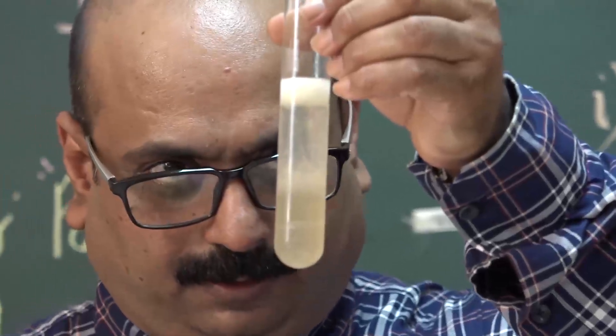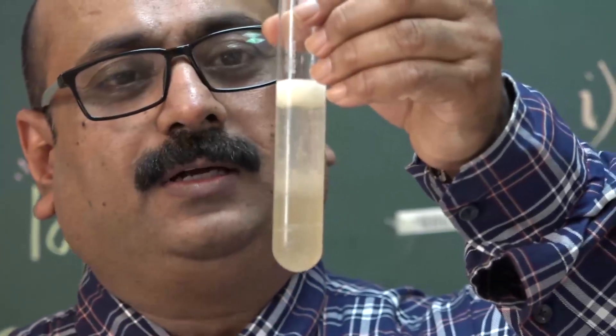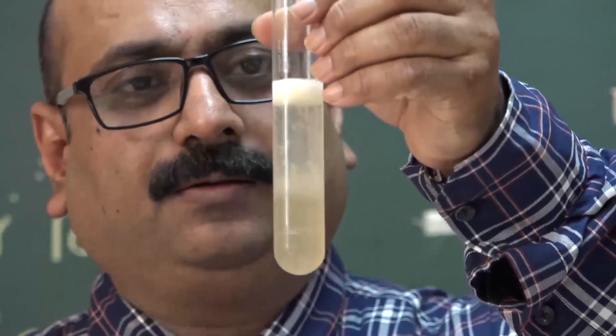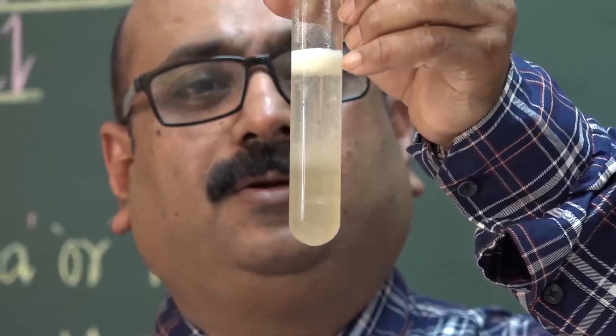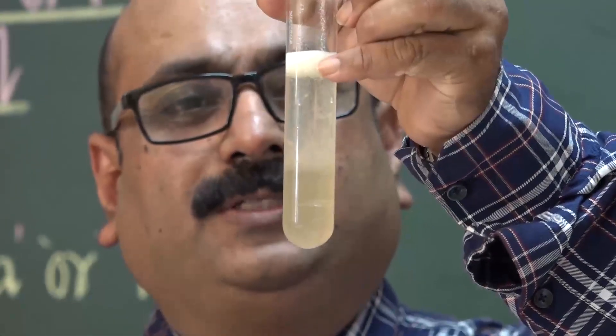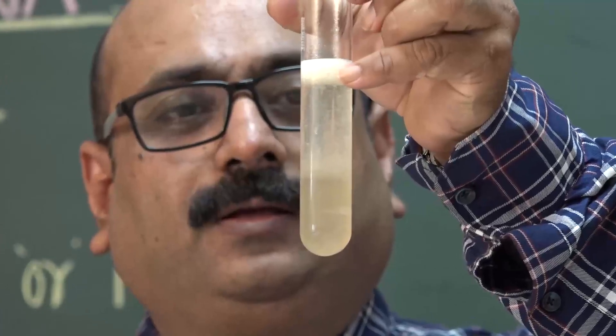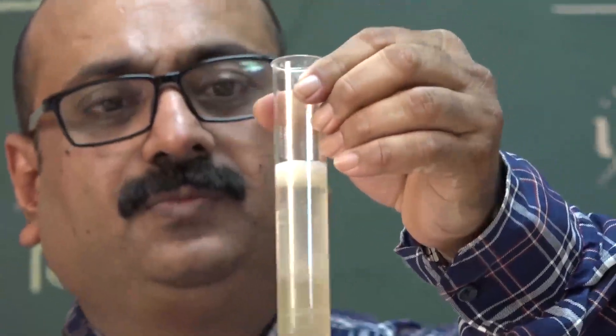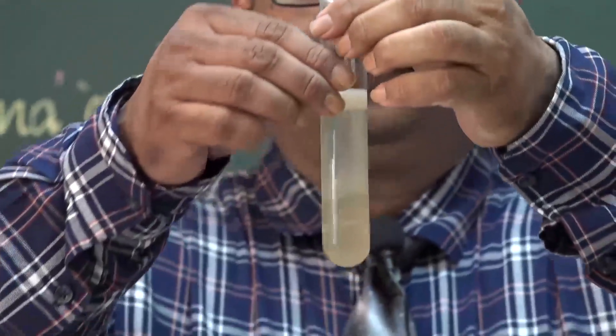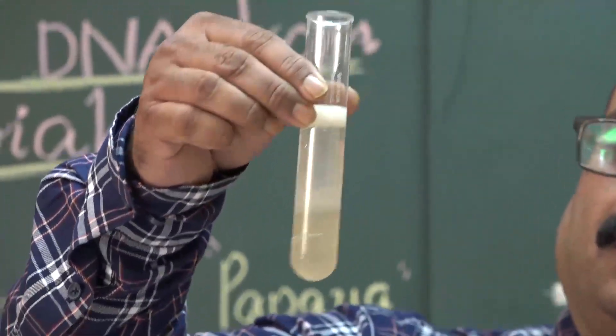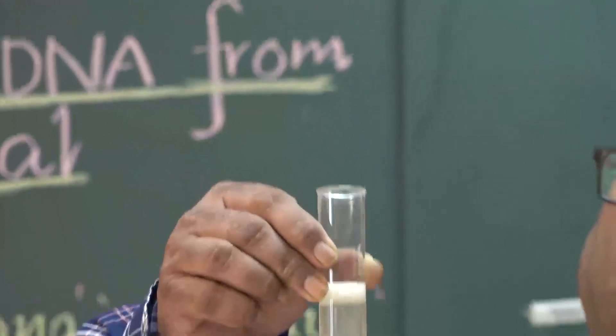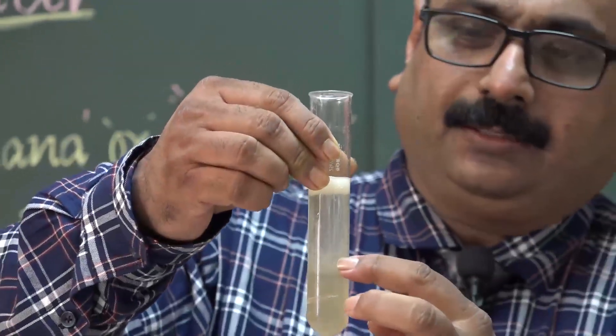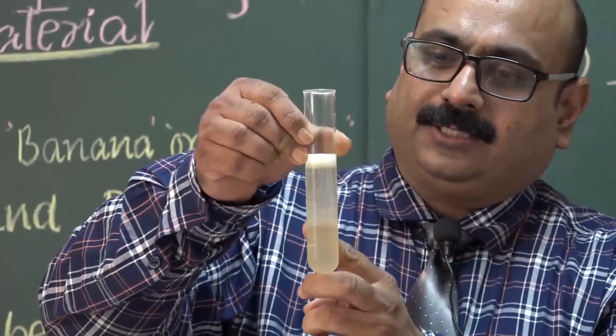See students, having mixed the chilled ethanol, how DNA is separating and white precipitate is settling at the bottom. This white precipitate is DNA.